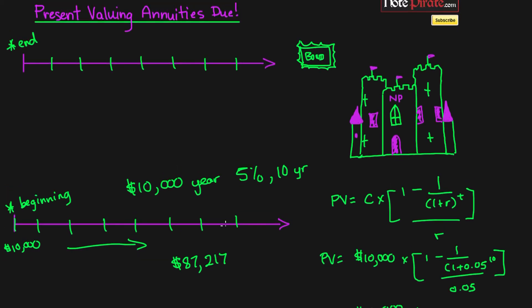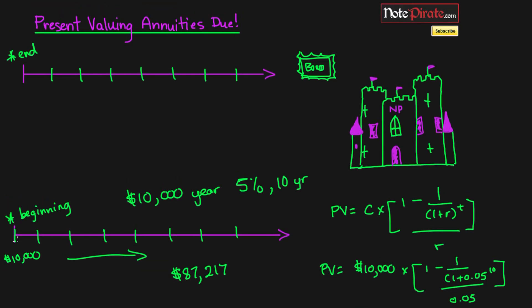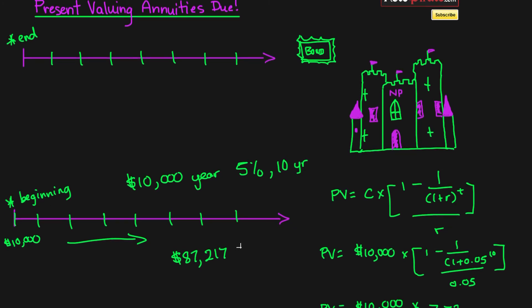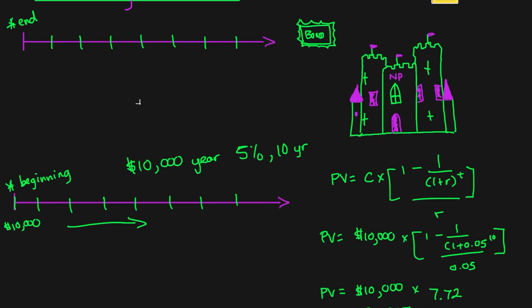You can see that they're very similar but there's just one difference and that's the beginning cash flow. Alternatively, if you don't want to use the annuity formula you can always, like I said in some of our previous tutorials, you can just discount each individual cash flow.